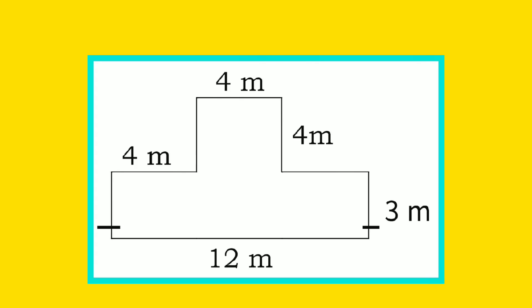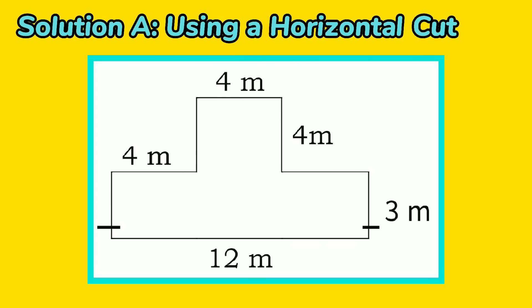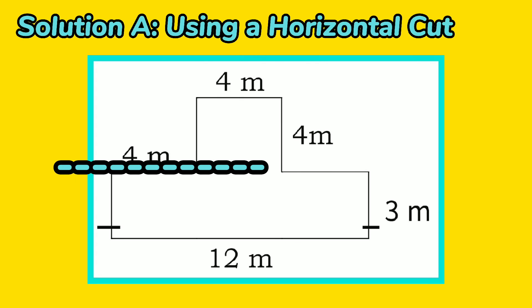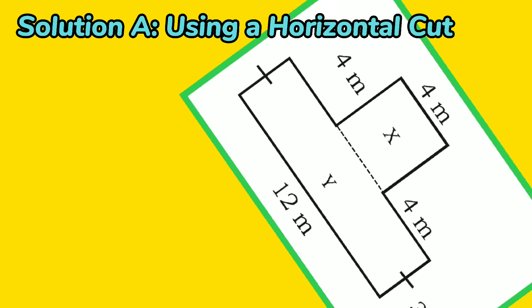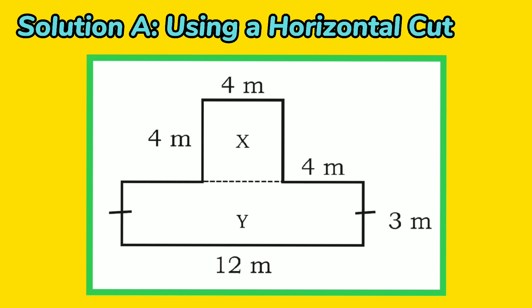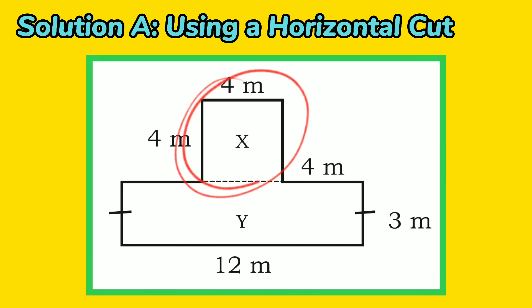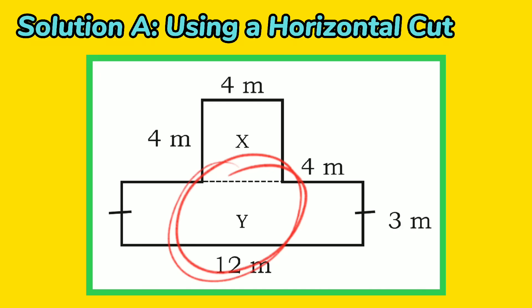Let's find the area of the irregular figure following these steps. Solution A: using a horizontal cut. Draw a horizontal line to form a rectangle and a square. The illustration below shows how it is done. Two figures are formed: Square X and Rectangle Y.